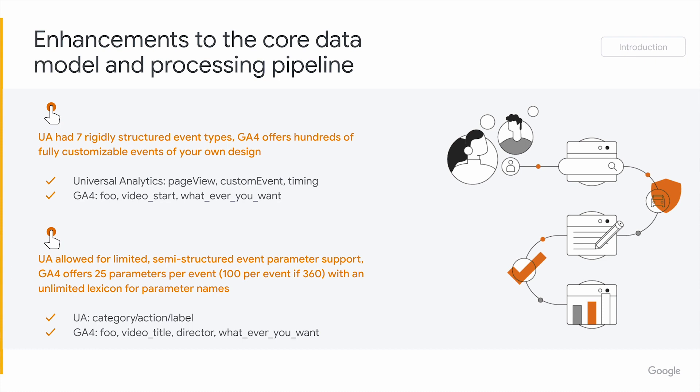With Google Analytics 4, you can break free of that. You can send 25 parameters for free and up to 100 parameters for 360 clients, and you can call these parameters whatever you want that best fits what's actually being stored — what actual attribute is being classified underneath that event. This was built so it could best fit your actual company's language, how your employees name the kinds of interactions and things occurring with your end users, and develop reports specific to those concepts that really speak truth to your employees.